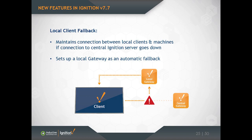But if the connection to that central gateway is interrupted, that client ceases all functionality. You might want that client to fall back to a basic HMI-type functionality so that even if you can't connect to the central gateway, you maintain your basic control and status functionality on that client. That's what the local client fallback ability gives you.